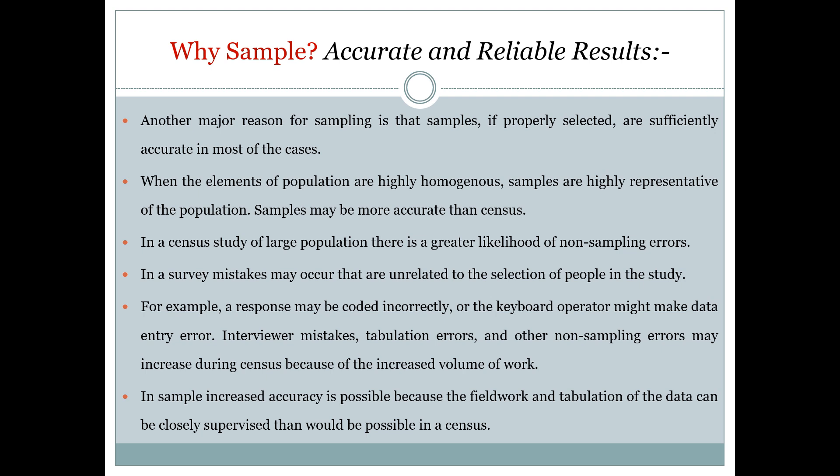If we want to manage 1 million people's data, it would be really difficult and chances of error would be more as compared to managing only 1,000 patients' data. In a sample, increased accuracy is possible because the field work and tabulation of data can be more closely supervised than would be possible in a census — which is the complete enumeration of the population.